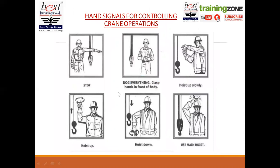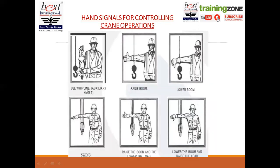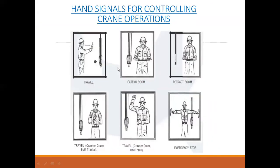For hand signals, you can also search YouTube for hand signal videos. Standard signals include: stop and dog everything, hoist up slowly, hoist up, hoist down, use main hoist, use whip line, auxiliary hoist, raise boom, lower boom, swing, raise the boom and lower the load, lower the boom and raise the load, travel, extend boom, retract boom, and travel crawler crane on both tracks. Double-check that your crane operator and signal man are using standard signals, not their own communication system.